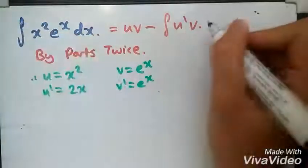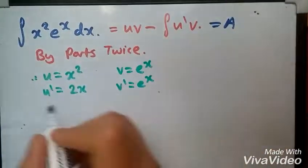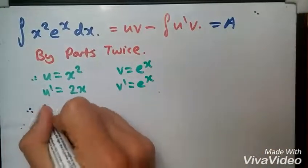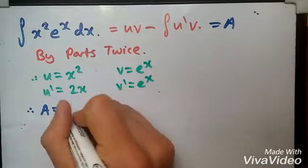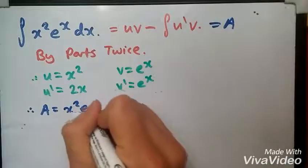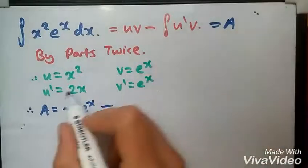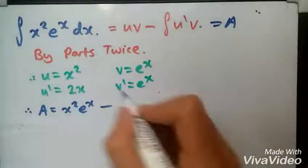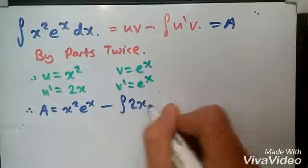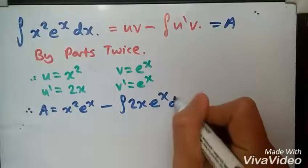Now let's solve the top solution. I'm going to call this solution A. So A equals, using the formula, u times v is going to be x squared e^x minus u prime times v, which is, taking 2 outside, 2x times e^x dx.